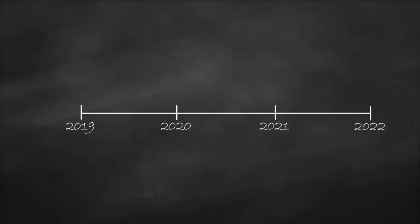Let's assume that we are going to issue a bond in year 2019, and then it will mature in 2022. This means we have three years to maturity. It will mature in year 2022, which will be year zero. From 2020 to 2021 it will be one period, from 2020 to 2022 it will be two periods, and from 2019 to 2022 it will be three periods.